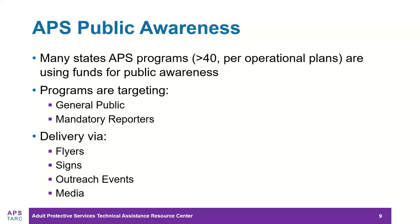Some programs are raising awareness with the general public using advertisements on radio and television. Others are spending funds to target mandatory reporters only, as nearly all states have certain individuals that are required to report adult maltreatment. We know of states engaging in activities from distributing flyers and posters all the way to larger outreach events, state conferences, and even radio and TV ads.